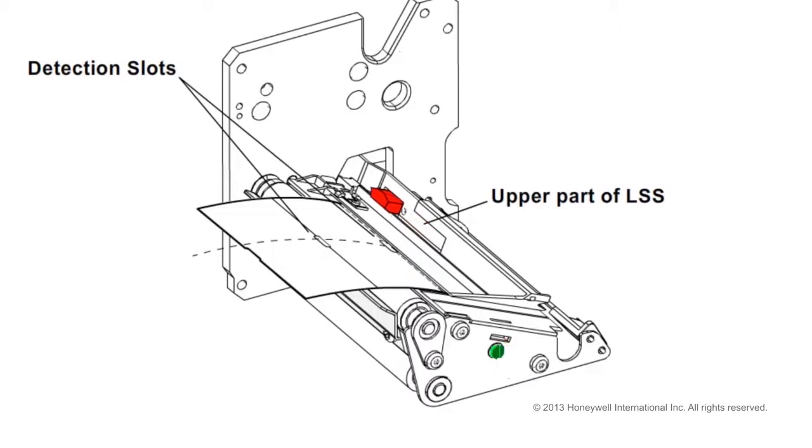Use a slotted screwdriver to turn the adjustment screw clockwise to move the sensor toward the center section. Rotate the screw counterclockwise to move the sensor outward, away from the center section.